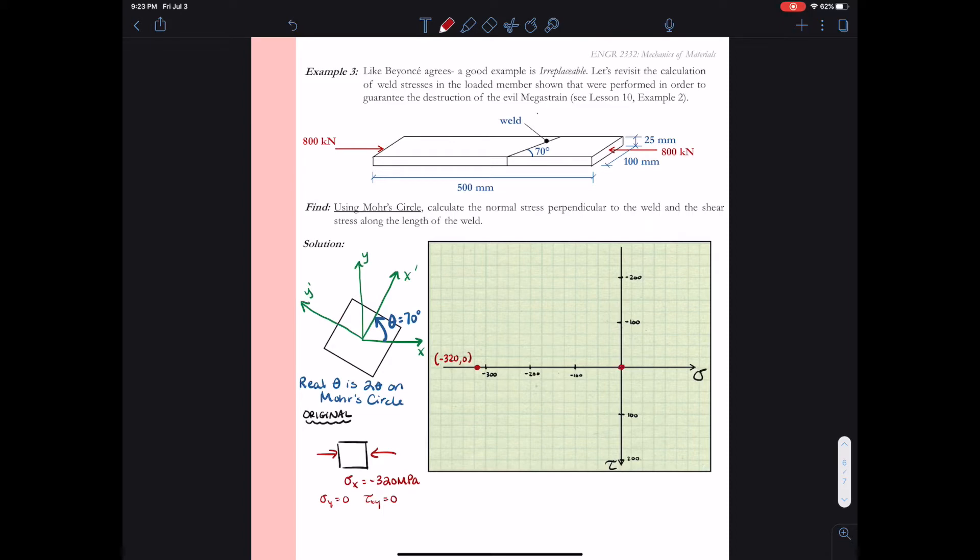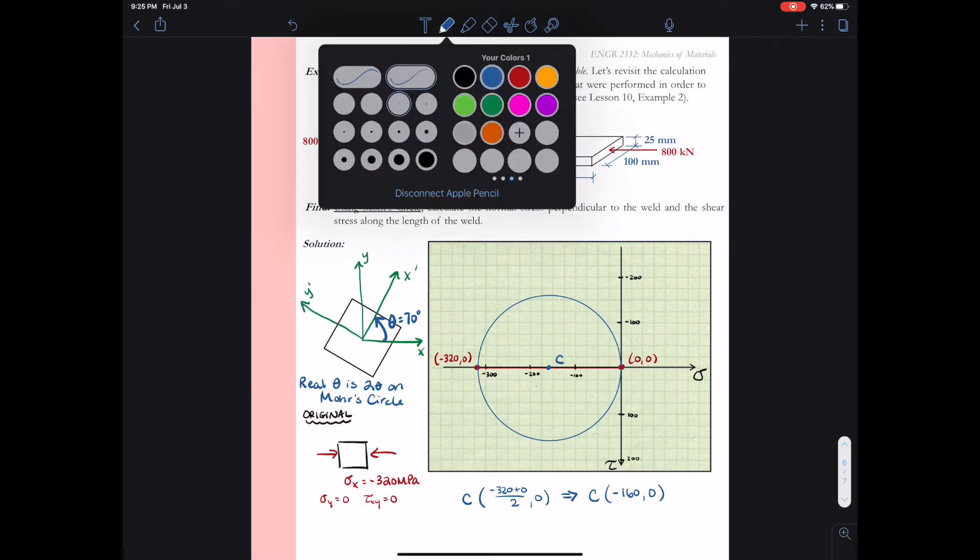I plot my first point. This is step three in drawing Mohr's Circle. I plot sigma x, tau xy and then sigma y, minus tau xy. So sigma x, tau xy is negative 320 comma zero, and sigma y minus tau xy is zero comma zero. This is a straight line and I can easily identify the center. The center is halfway between them, at minus 160 comma zero. I can then draw my circle, and using this program on my tablet it's much easier to draw the circle cleanly.